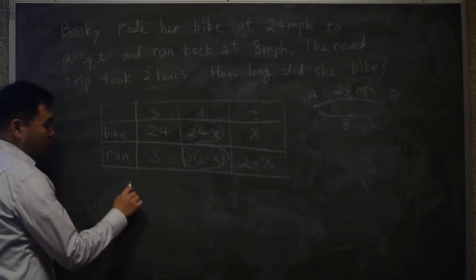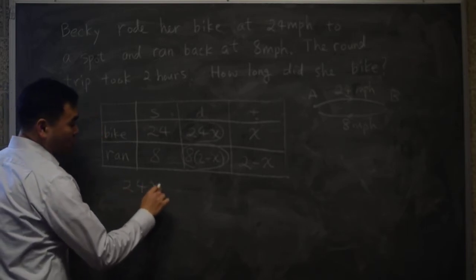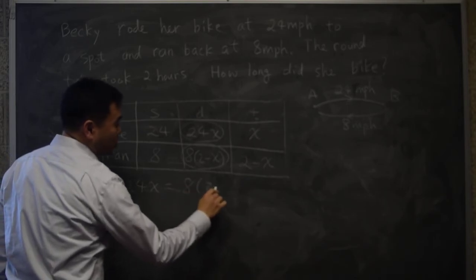So that's what we have to do. We should solve this: 24x equals 8 times 2 minus x.